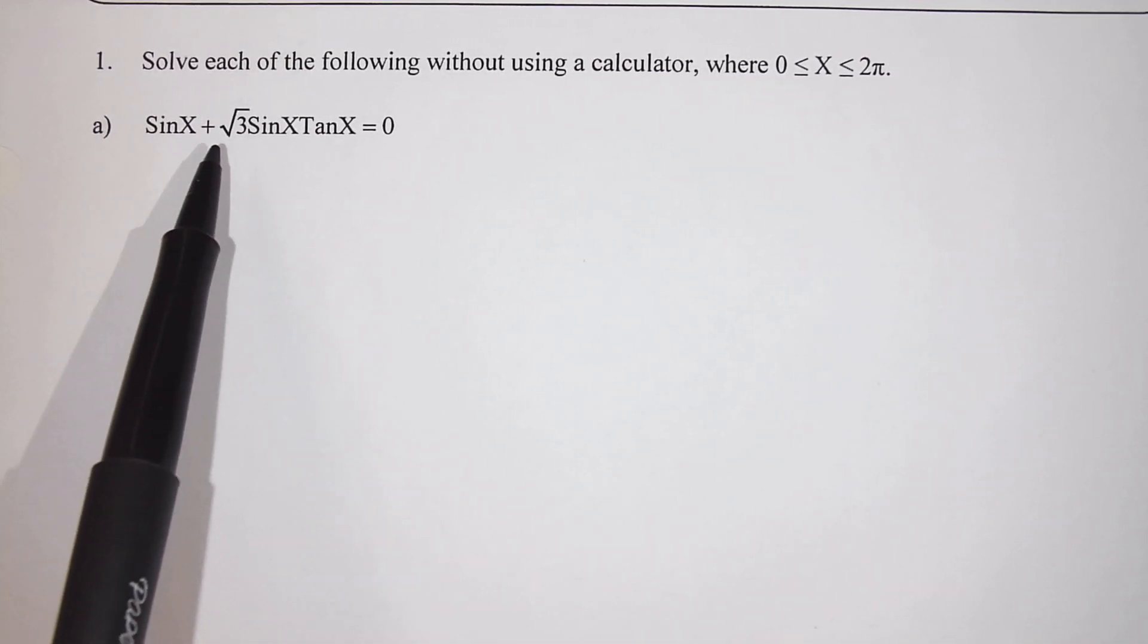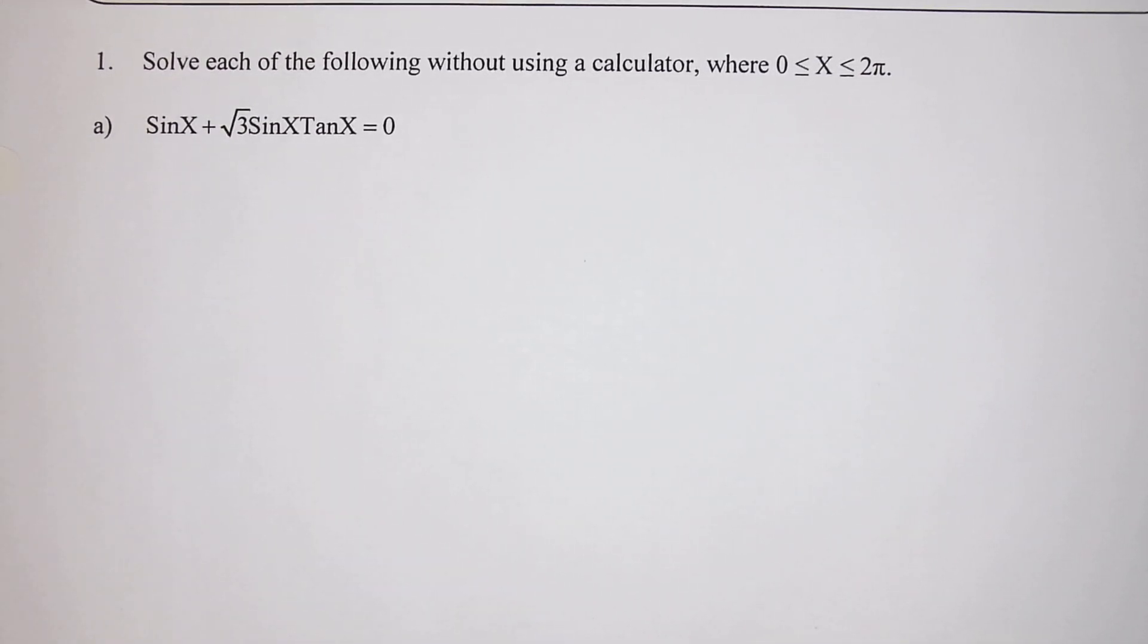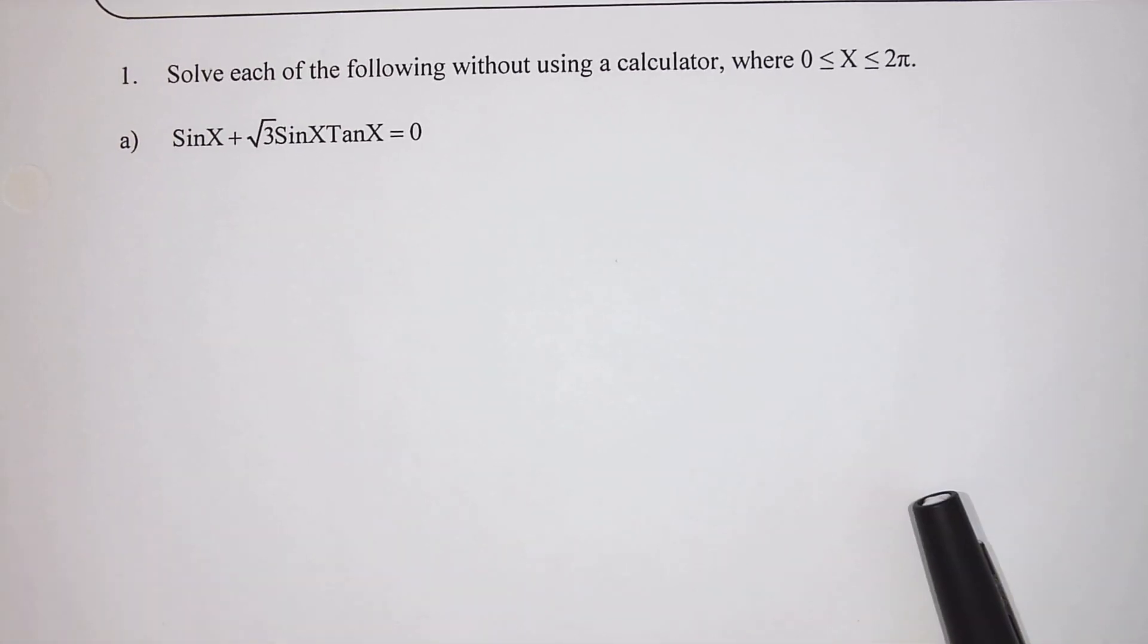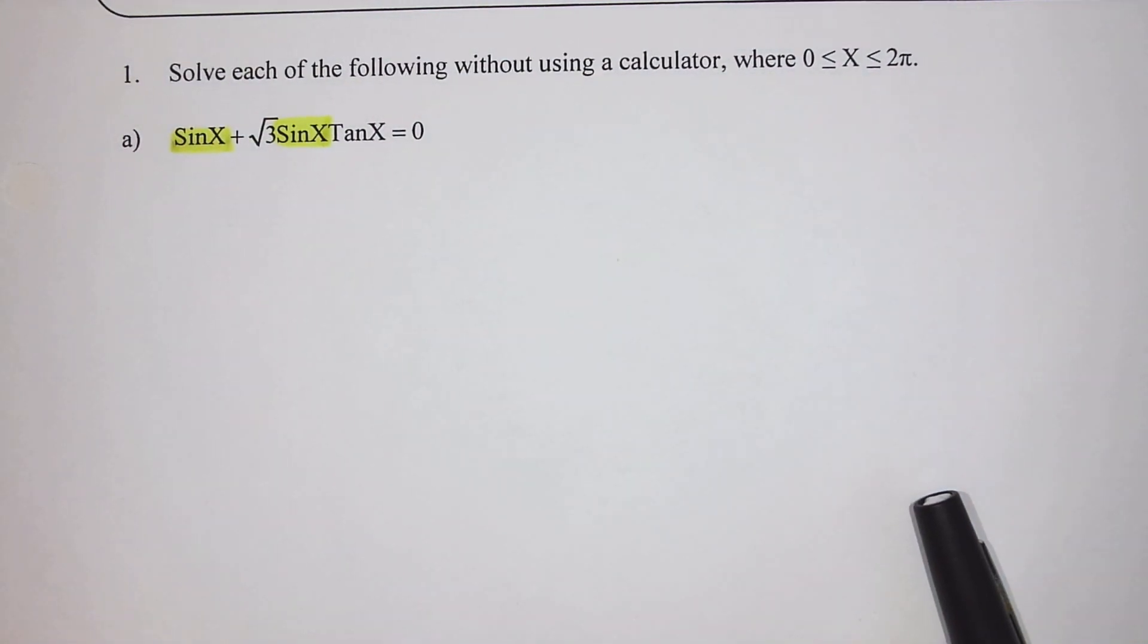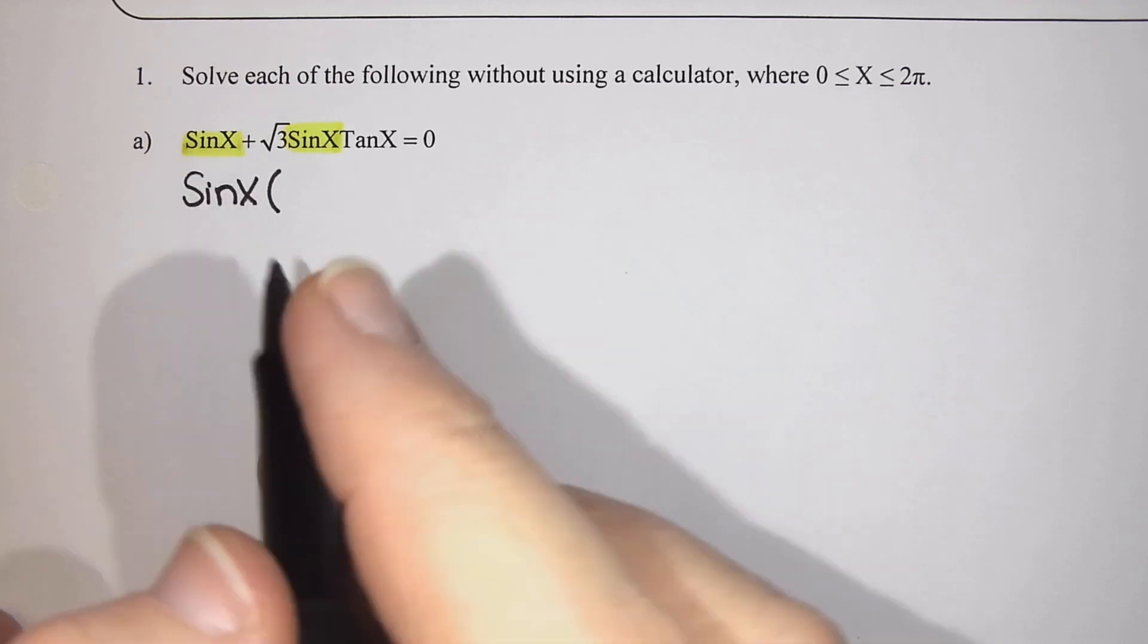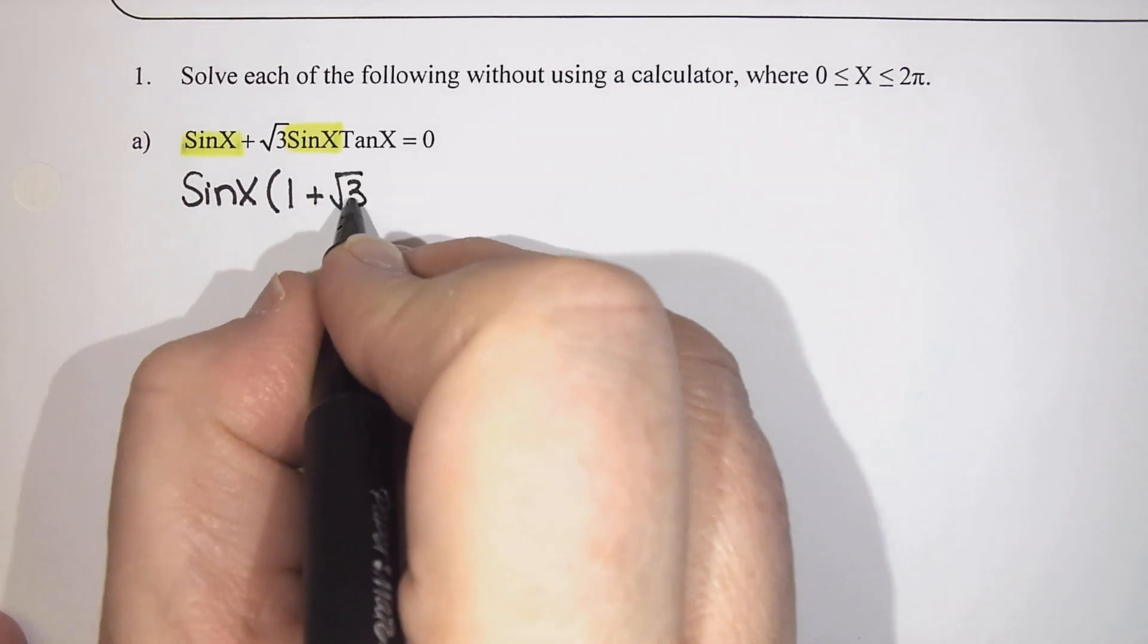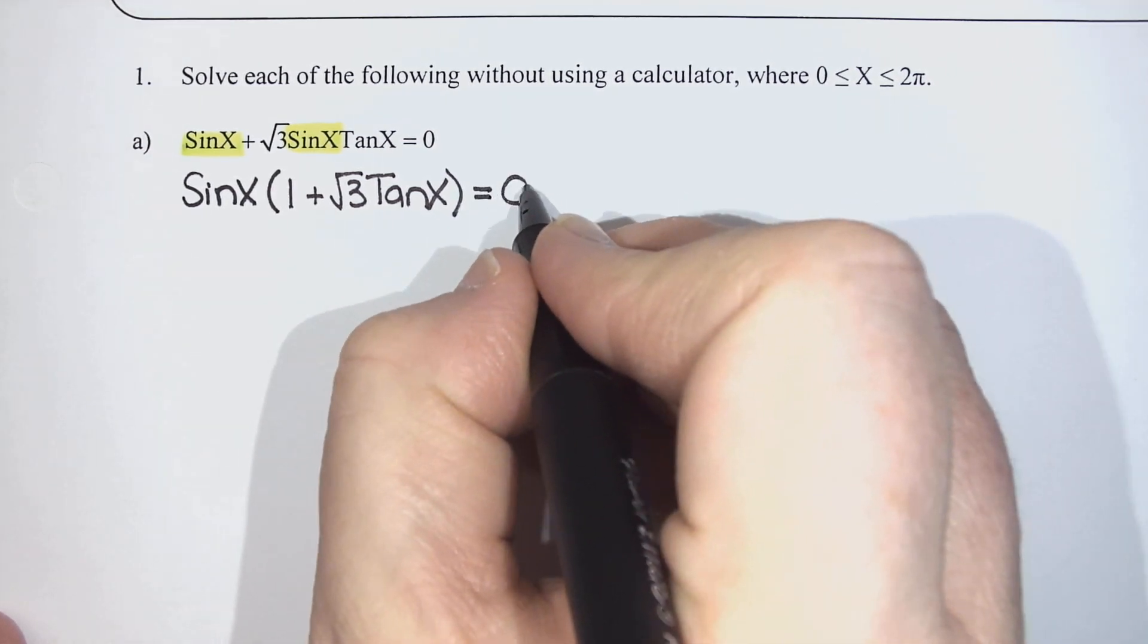Instead we're going to see if we can factor. Now if I want to solve by factoring, rule number one is it has to equal zero or we have to rearrange it to make it equal zero. Second thing we're going to do is see if we can factor. This technically has two terms separated by a plus sign. I noticed that they both have a sin(x) and I am feeling very tempted to common factor out that sin(x). So I am going to common factor out sin(x). If I do that, sin(x) times 1 gives me sin(x), and then sin(x) times √3·tan(x) gives me √3·sin(x)·tan(x), and that still equals zero.